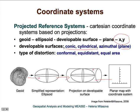Based on the type of distortions, we have different kinds of projected reference systems. Systems that preserve shape are called conformal; those that preserve distances are called equidistant; and those that preserve areas are called equal area. The most common are conformal and equal area, and you will probably work with either of these in your project.